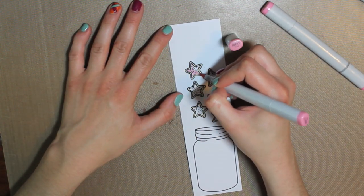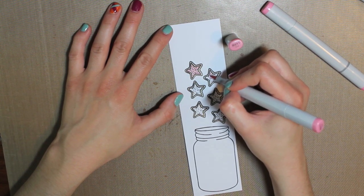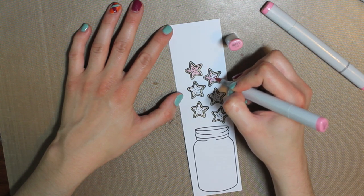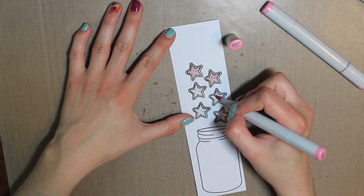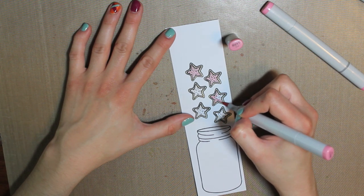And then I'm just going to show you how I'm coloring in the frosting part. I'm using an RV11 which is a light pink.